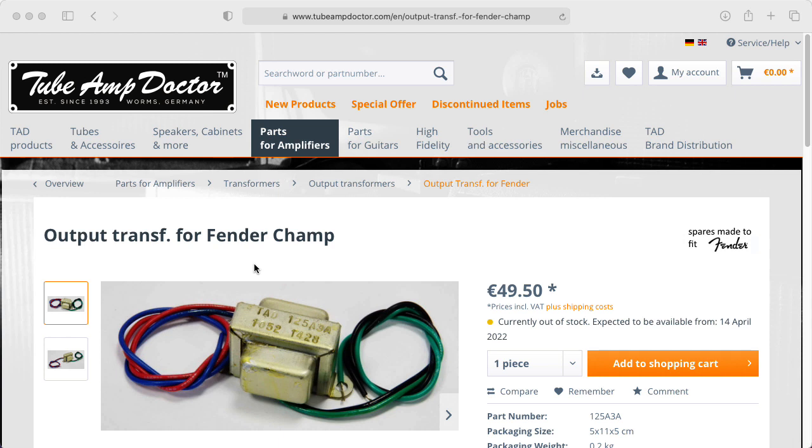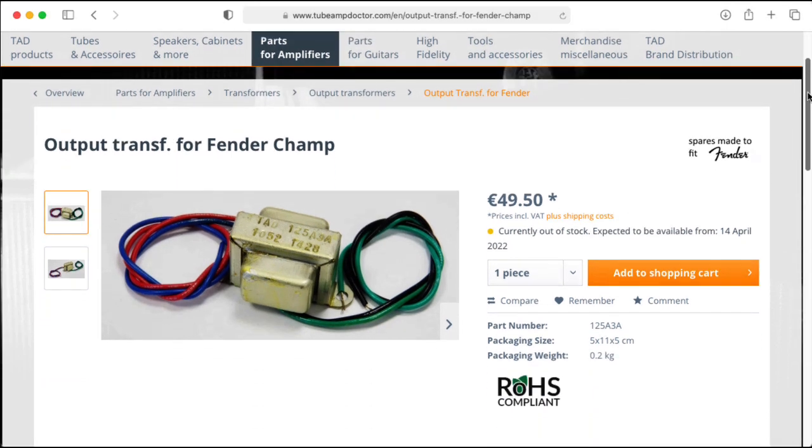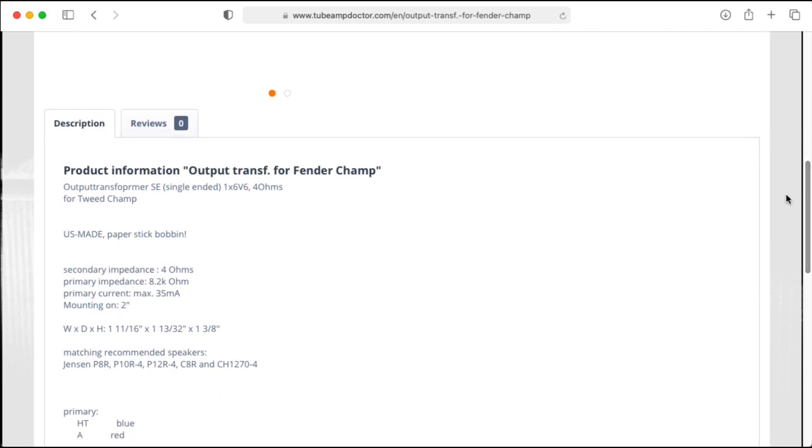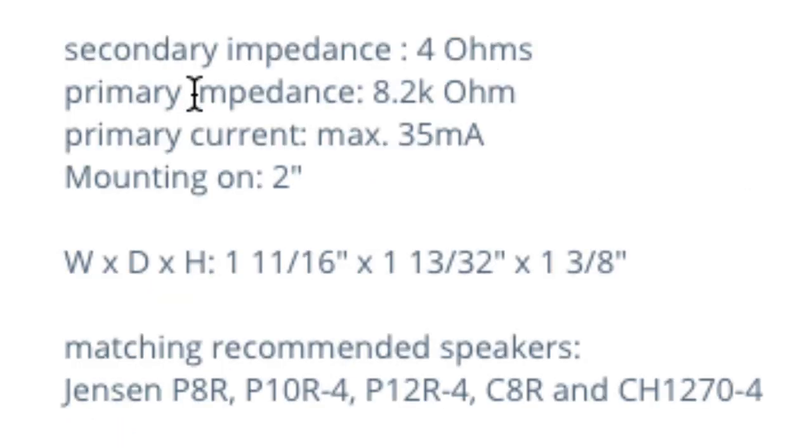Okay, so I found this transformer at an outfit called the tube amp doctor. Oh, Euros. Where is this? Oh, it's from Germany. Anyway, if we scroll down a bit, we see that the secondary impedance is 4 ohms. That's for the speaker. Primary impedance, 8.2 kiloohms. Primary current, max 35 milliamps.